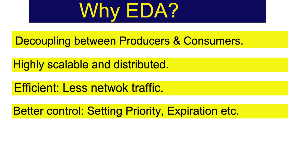The next advantage of event-driven architecture is better control. We can do priority-based message handling — for example in JMS-based messaging, we can set the priority of a message and message delivery works based on that priority. We can also specify expiration: we specify that a message should expire after a certain amount of time, after which it becomes irrelevant. The broker handles those messages according to how we want to prioritize and expire them, giving us better control over the flow of information from the producer to the consumer through a message broker.